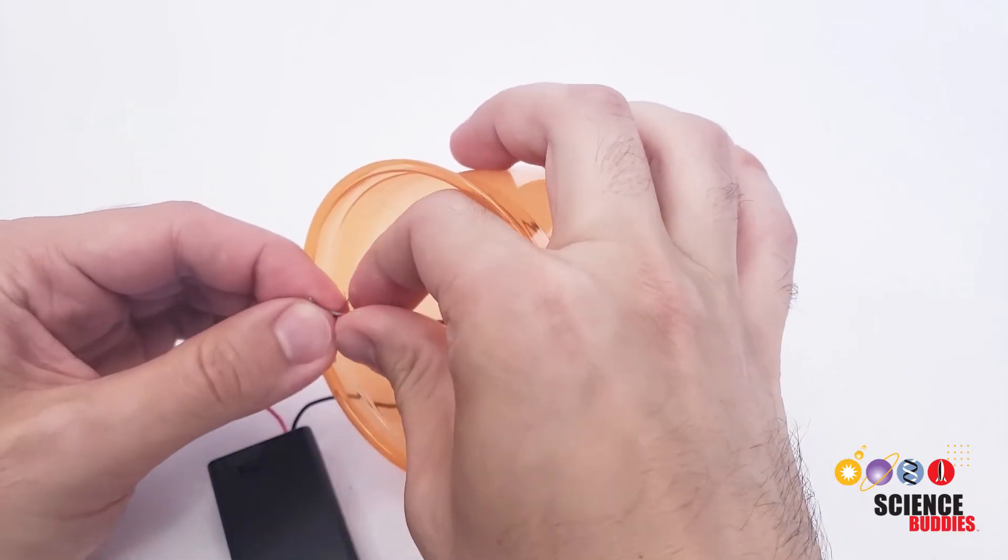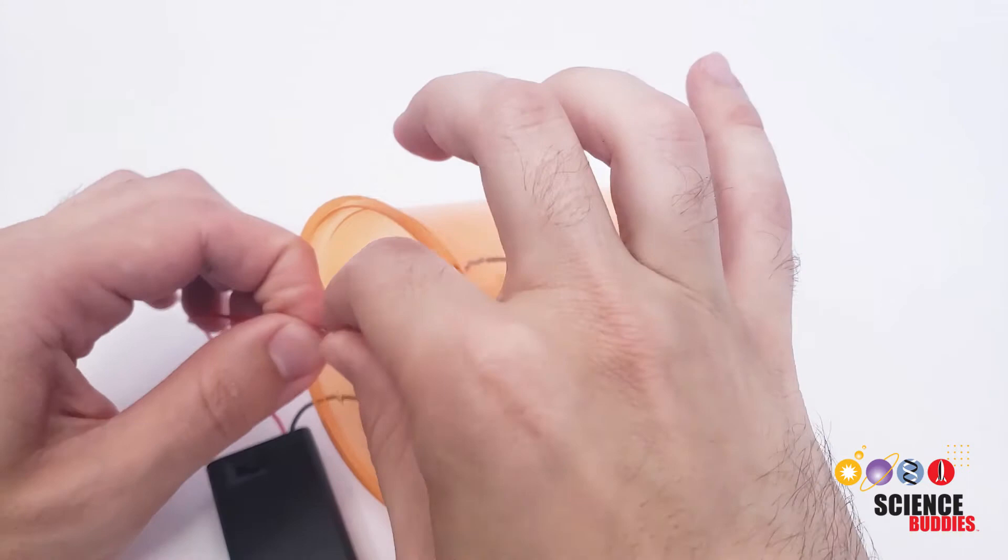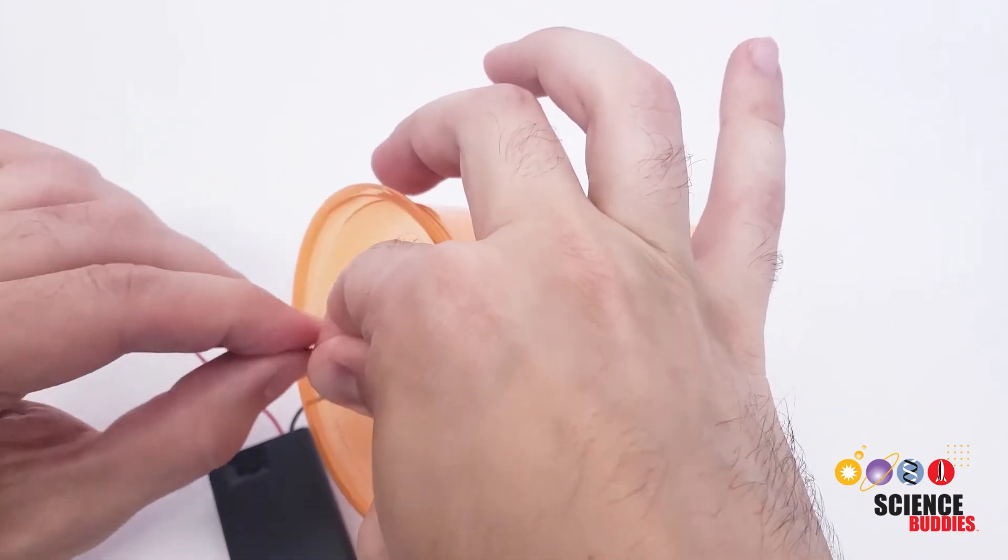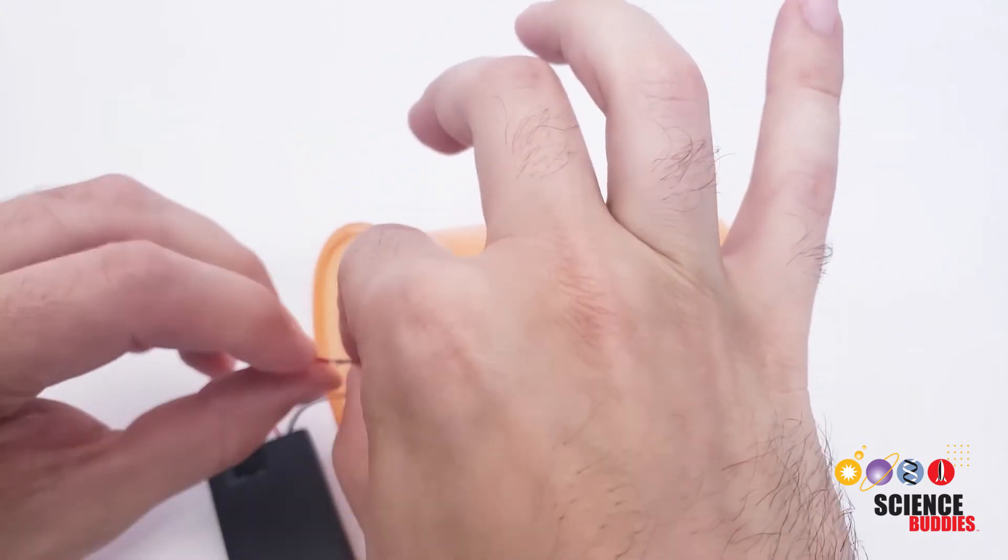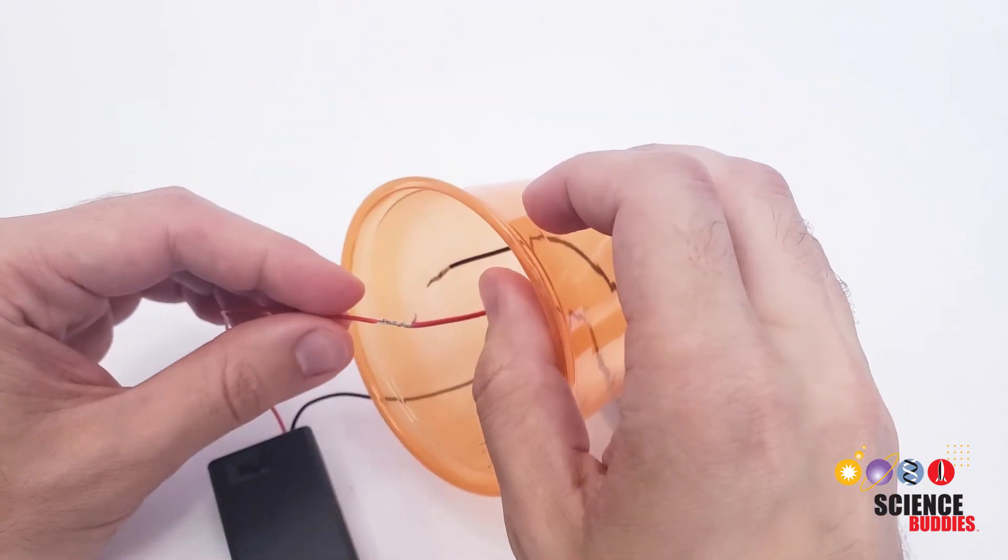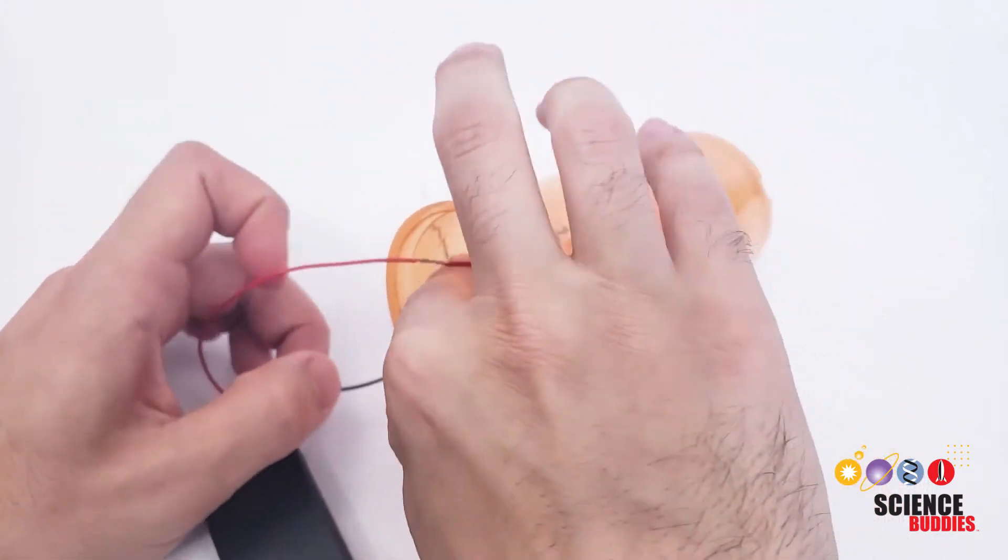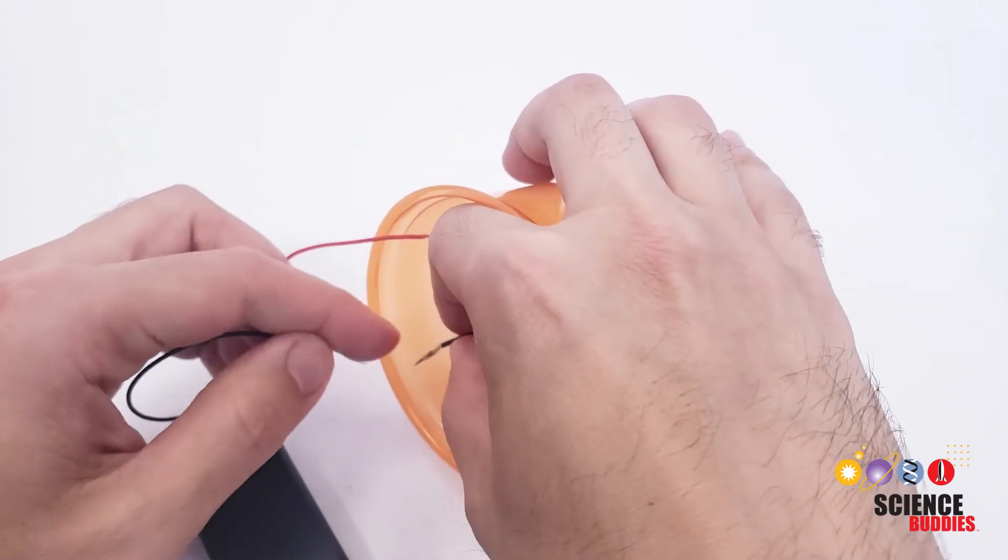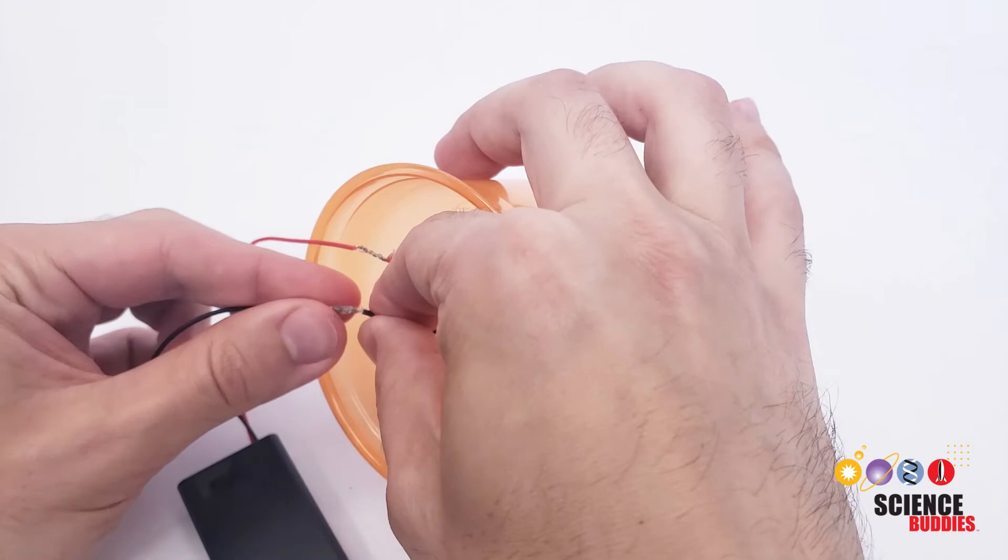So we're going to take the loose ends of these wires. And if you have access to a soldering iron, you can solder these connections to make them stronger. But for our purposes, just twisting them together nice and tight and then wrapping them with electrical tape to prevent those loose wires from bumping into each other and creating a short circuit is usually going to be good enough.